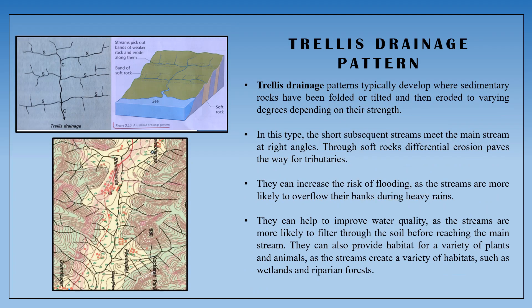Next, we can see the Trellis Drainage Pattern. The Trellis Drainage Pattern is found in sedimentary rock circuits. The trellis drainage pattern forms a right angle — this angle is almost 90 degrees. So the trellis drainage pattern is characterized by right-angle junctions.